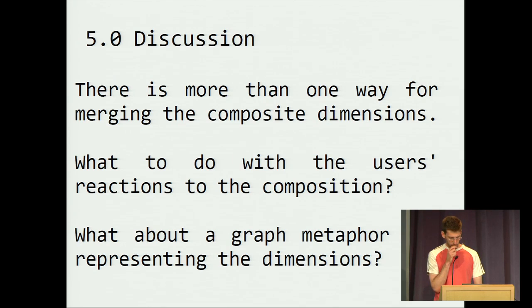Once that has been said, we must add that there is more than one way for the merging of the composite dimension. There is not a bijection between the composite dimension, d.draft and d.firstversion, for example, and the d.anteriority. There are more than one ways to build an anteriority from draft and firstversion. The algorithms I implemented choose one of these ways. But maybe it's not the better one from the user point of view. So, maybe the user will rearrange the anteriority dimension and what to do with his reaction to this composition. For now, I do nothing with it, but I think there is something interesting to do there.